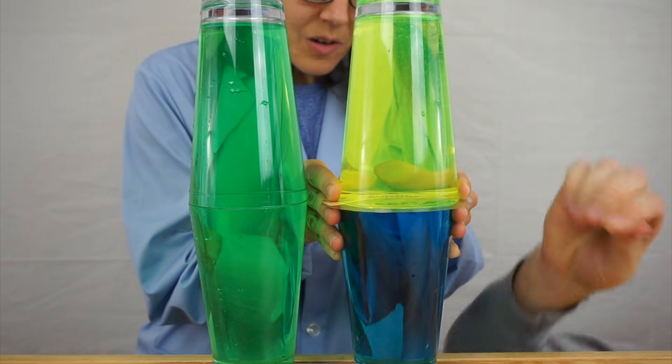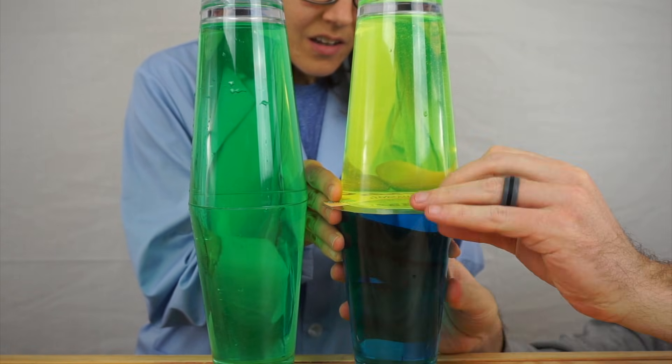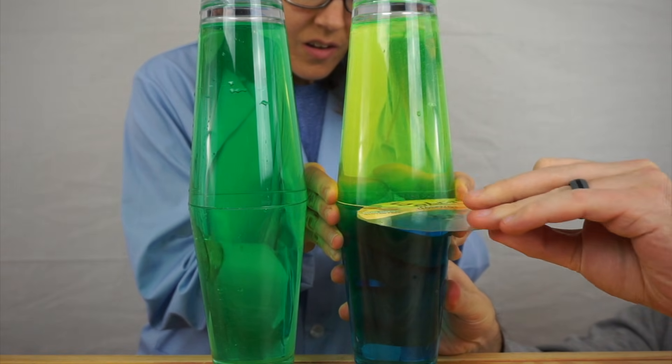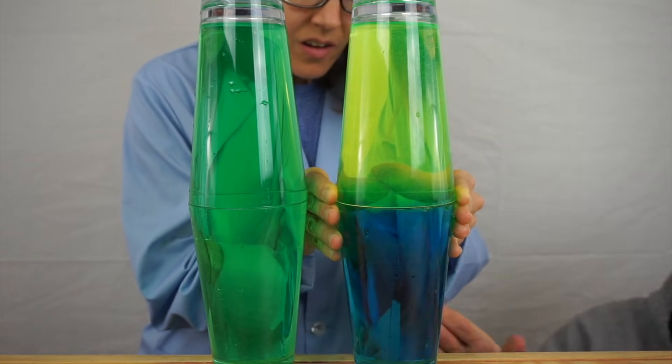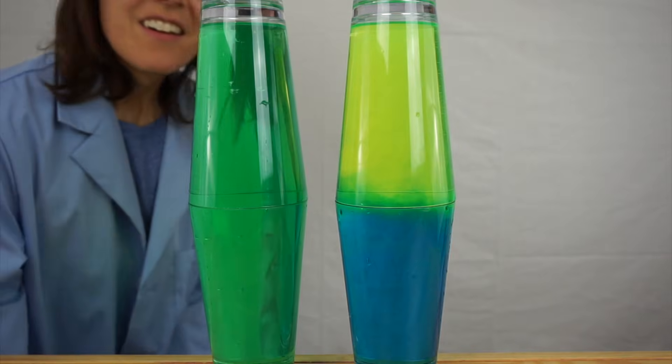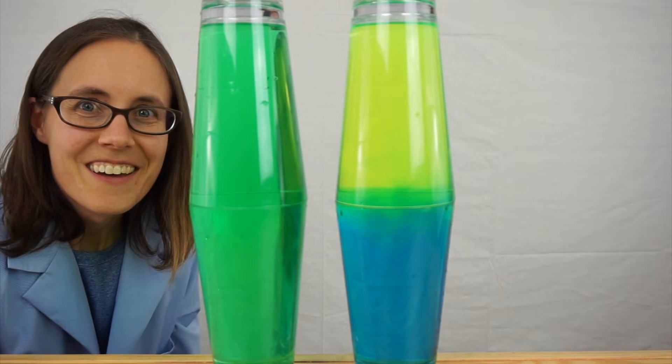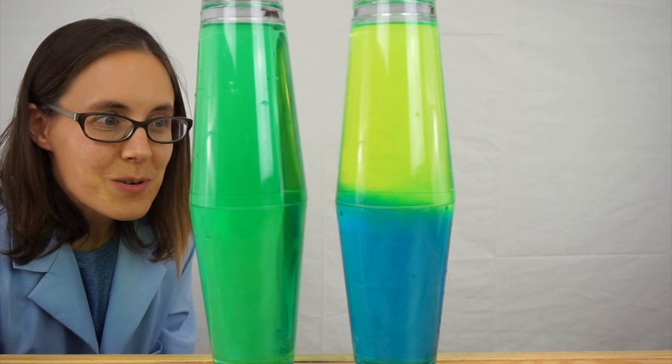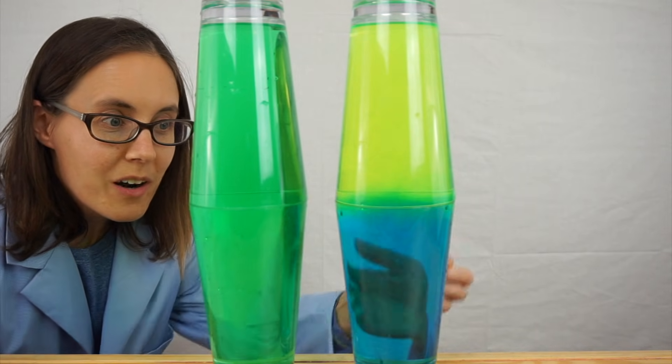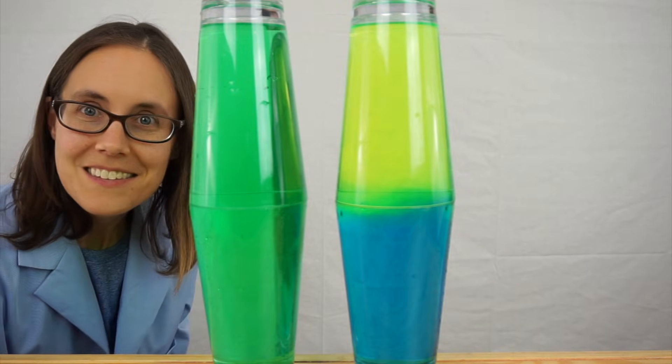Nice and slow. And this time, the water stays layered. The yellow water is less dense so it stays on top, and the blue water, which is heavier, more dense, stays on the bottom.